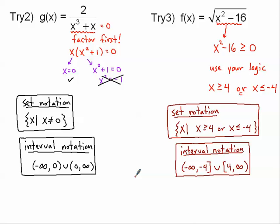For the first practice problem, set the denominator equal to zero. It helps to factor first — since it's a cubic denominator, there could be up to three restrictions. Pulling out the GCF of x gives x(x² + 1) = 0. So x = 0, or x² + 1 = 0. But x² + 1 = 0 means x² = -1, which has no real solution. So x = 0 is the only restriction. Here's the set notation and interval notation for that.